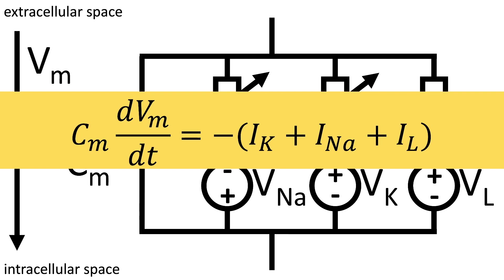On the left hand side we see the capacitive part and on the right hand side we see that this has to be equal to the sum of all currents.